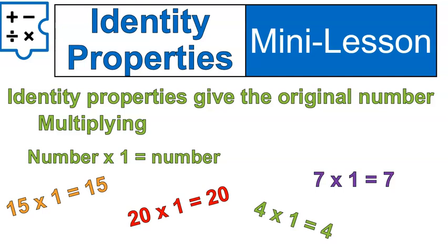That's the identity property of multiplication. Remember, to identify something is to label what it is. So if we're identifying a number like twenty, we want to say twenty is twenty. That might be a way to help you remember the identity property — you get the number that you started with.